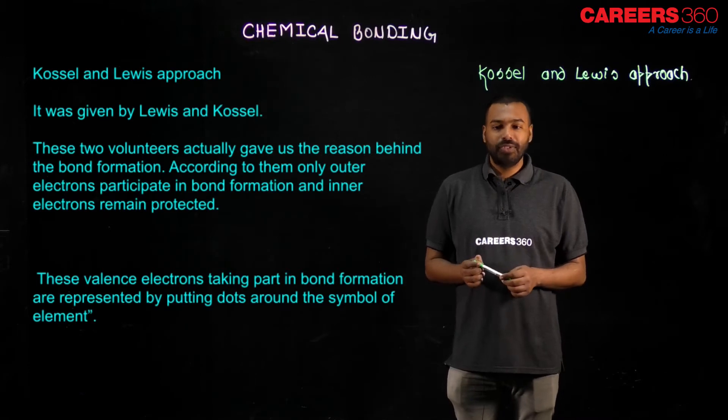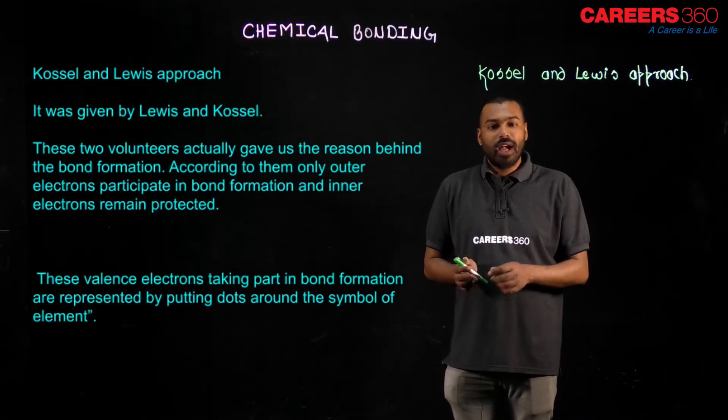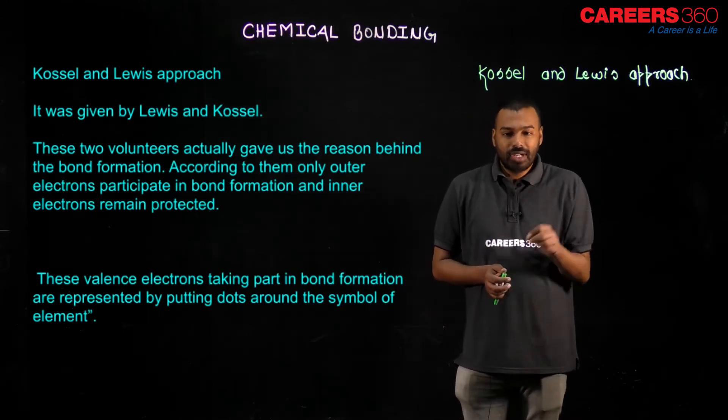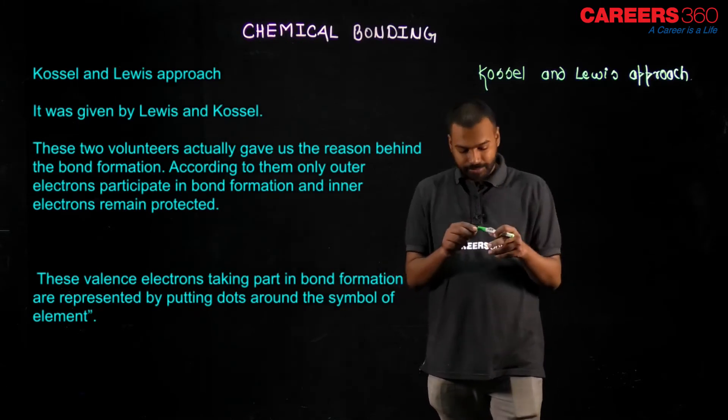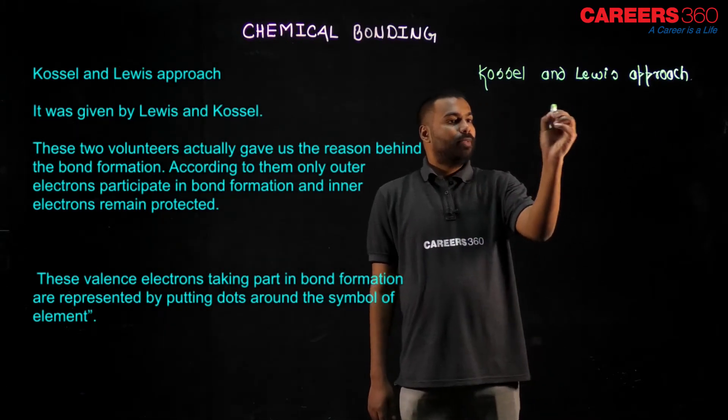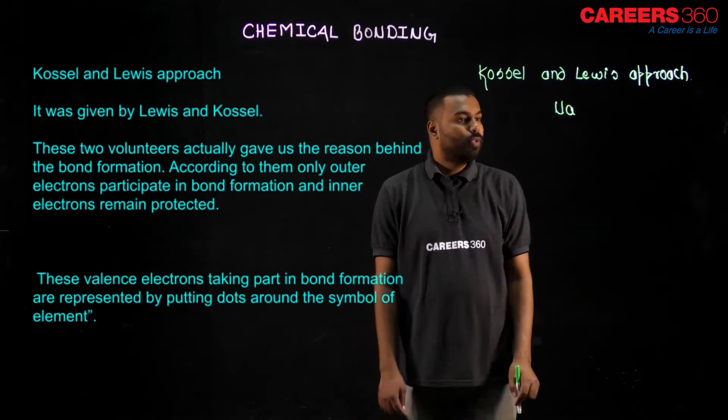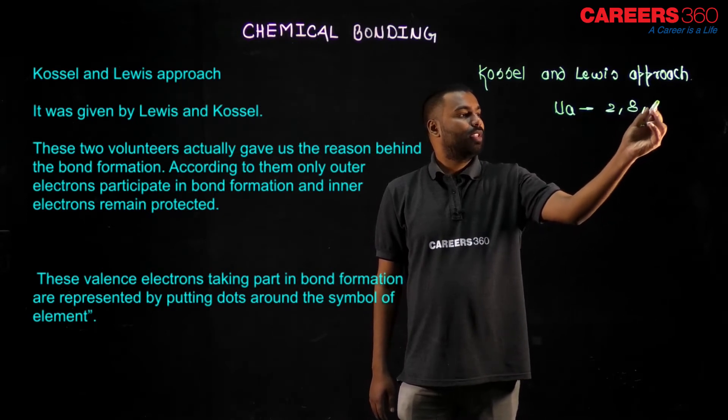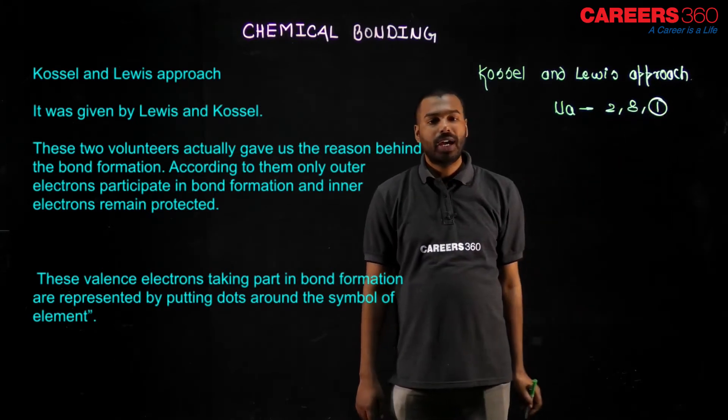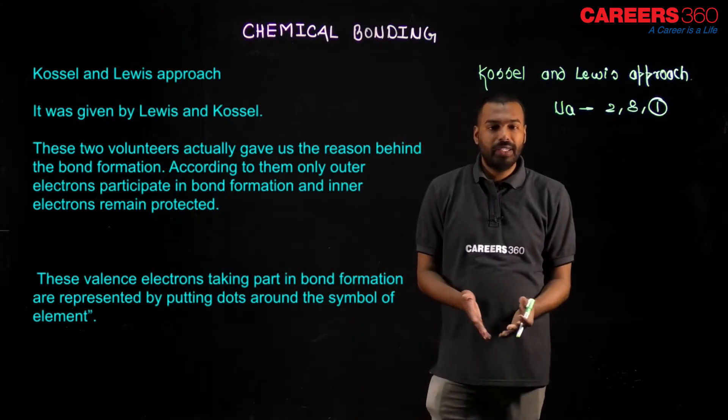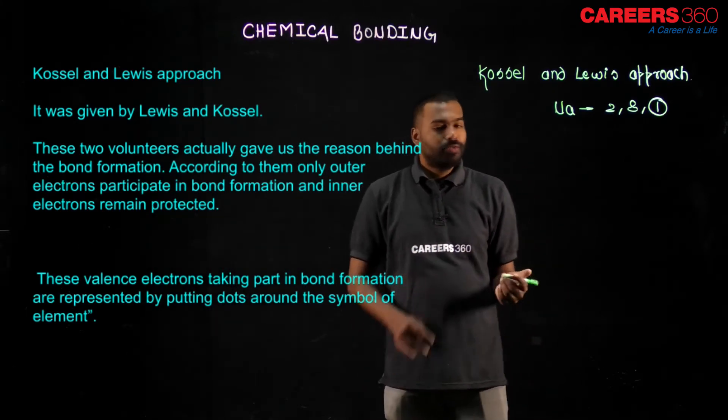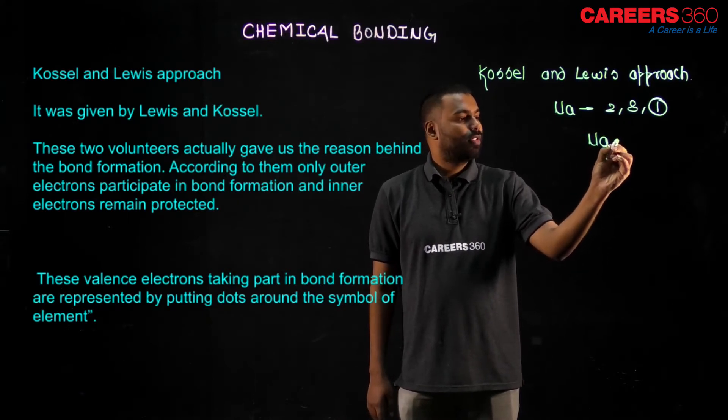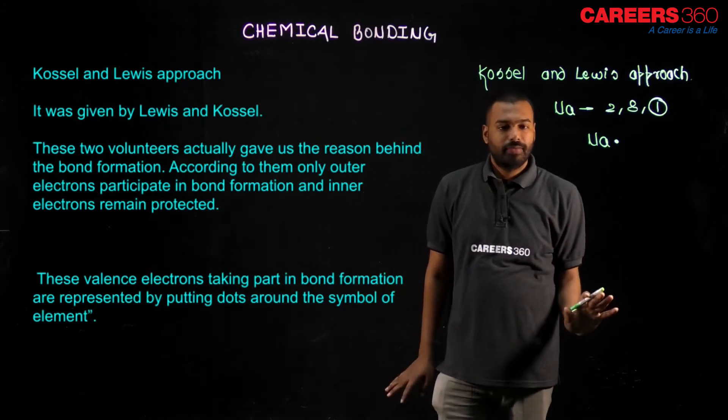These valence electrons taking part in bond formation are represented by putting dots around the symbol of element. How? See here. Suppose I have sodium. Sodium electronic configuration is 2, 8, 1. So valence shell electron is 1. What will I write? If I want to write the Lewis dot structure, what will I write? I will write Na and 1 dot. That is it.